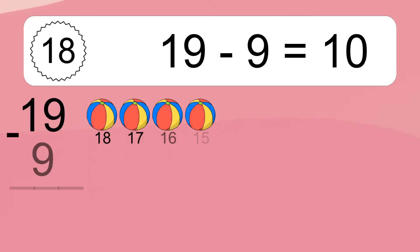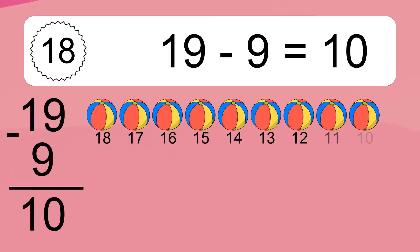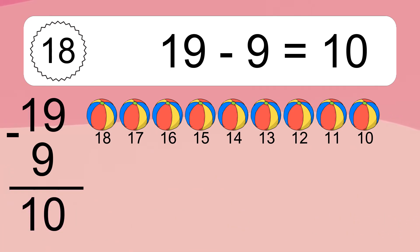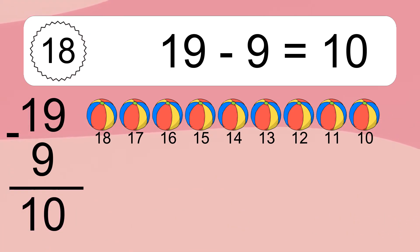19 minus 9 equals 10. Let's count it: 18, 17, 16, 15, 14, 13, 12, 11, 10.